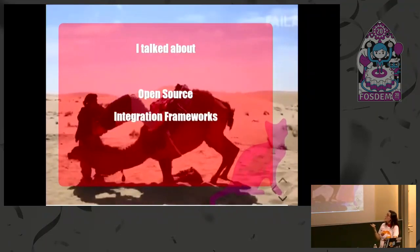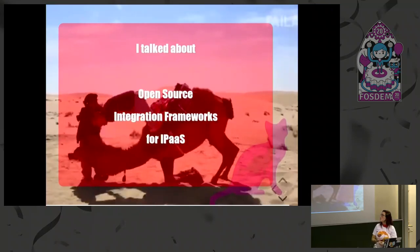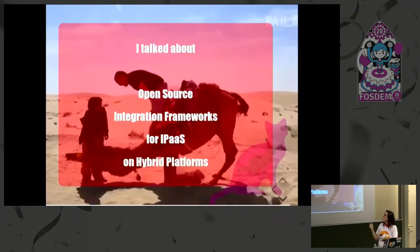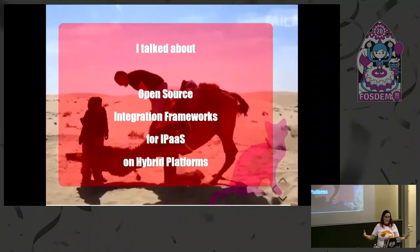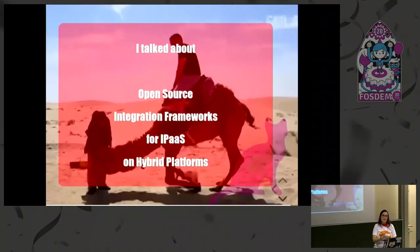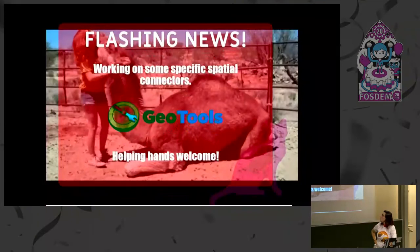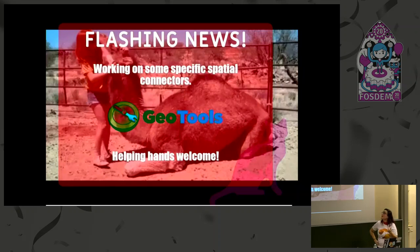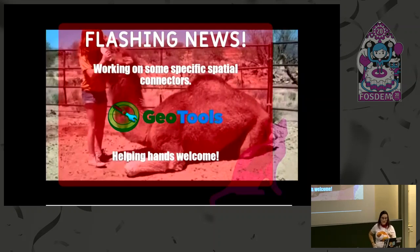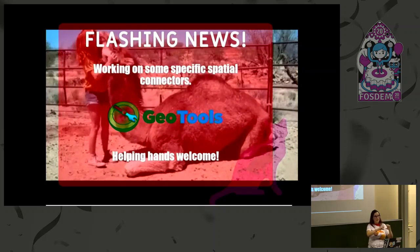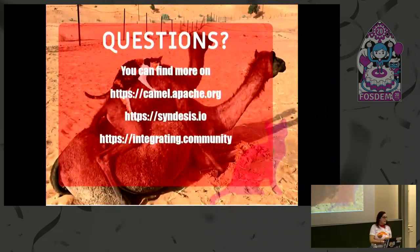To summarize: I talked about open source integration frameworks so you can do data workflows easily, for integration process as a service — which involves Docker and Kubernetes containers — on hybrid platforms, connecting even non-open-source components like Twitter and Salesforce, using enterprise integration patterns. I'm also working on adding specific connectors for geospatial, because while you can already use geospatial data with this, there are no specific connectors that understand you're working with geometries. Any help is welcome. And that's it — thank you.